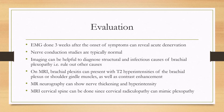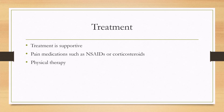MR neurography can sometimes be helpful and can show nerve thickening and T2 hyperintensity as well. MRI of the cervical spine is sometimes done since cervical radiculopathy can mimic plexopathy.